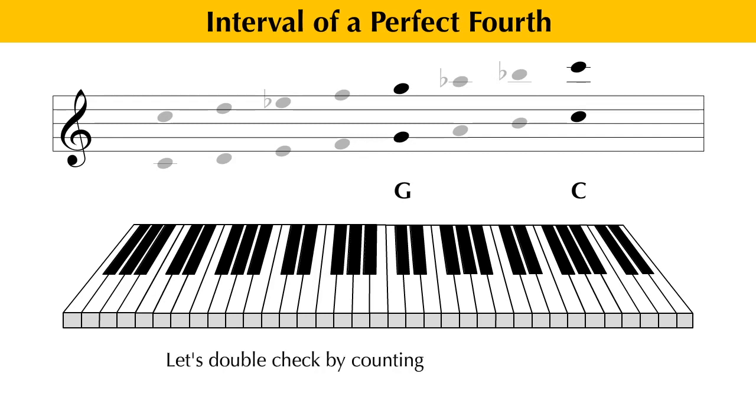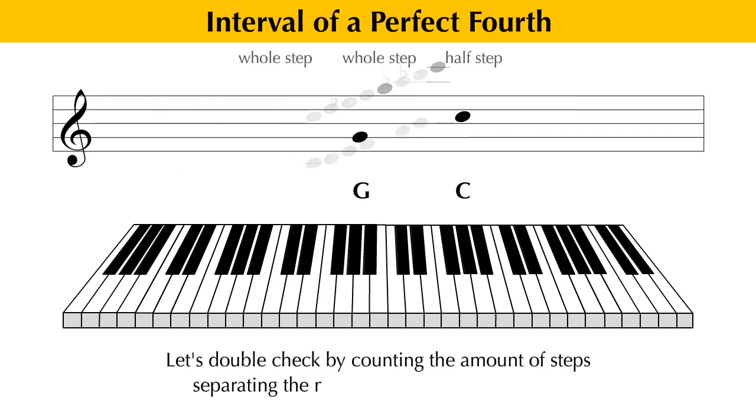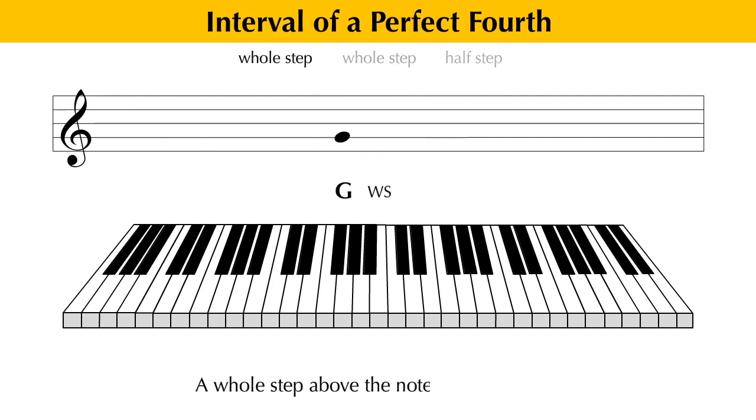Let's double check by counting the amount of steps separating the notes G and the first C above it. A whole step above the note G is the note A. Another whole step above A is the note B. And finally, a half step above B is the note C.